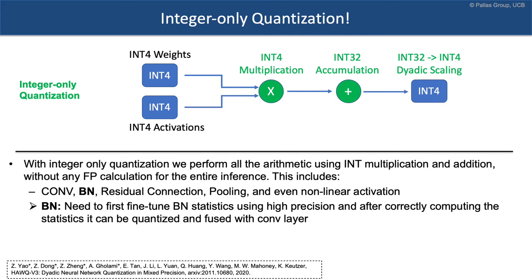We can quantize batch normalization — that's not a problem. The key idea is: when you're fine-tuning your neural network during quantization, you need to first make sure that the batch norm statistics are calculated with high precision, so you can correctly calculate the mean and standard deviation of activations. After calculating those correctly, they can be quantized and fused with the convolution layer. If you do this, you can quantize batch norm with no accuracy degradation.